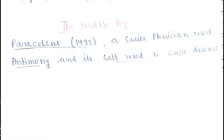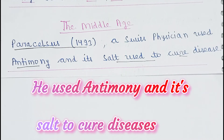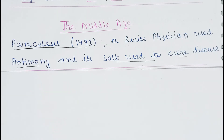Middle age में पाया गया कि Paracelsus (1493) एक Swiss physician थे, जो antimony और उसके salts का प्रयोग करके diseases को cure करते थे। इससे यह भी साबित होता है कि जिस तरह ancient लोग medicinal plants और herbs का उपयोग करते थे, धीरे-धीरे जब medicinal chemistry का जर्म हुआ, वो इसकी scope बढ़ती गई और scientists ने काफी research किये।